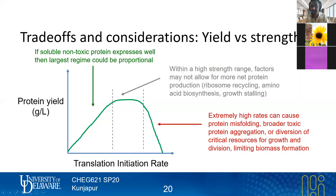I see a hand raised. The question was: does something like the RBS calculator take this into account when maximizing RBS strength — does it know that at some point it's going to be too strong? No, it doesn't. That is a great question. That is very much up for the user to empirically find out, because in order for it to do that, it would have to have a lot of knowledge about what your protein is and potentially many other aspects.